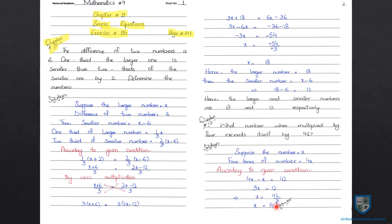14 को अगर हम 4 से multiply करें तो 56, उसमें से 14 subtract करें तो answer 42 के equal आएगा। यह question number 11 और 12 solve हुए।